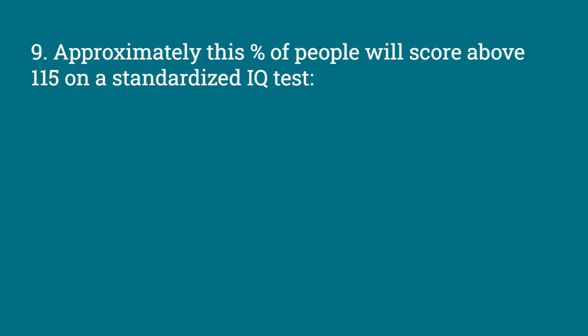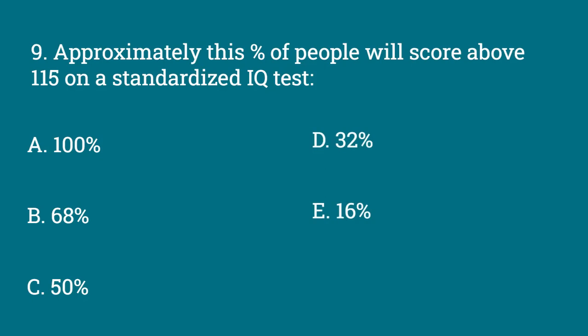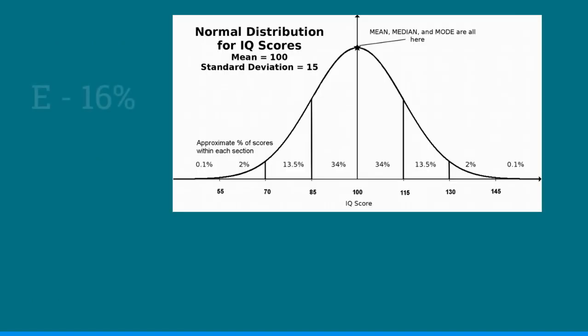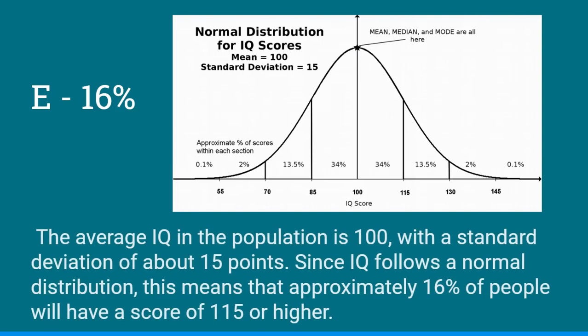Approximately what percentage of people will score above 115 on a standardized IQ test? The answer is E, about 16%. The average IQ in the population is 100, with a standard deviation of about 15 points. Since IQ follows a normal distribution, approximately 16% of people will have a score of 115 or higher.